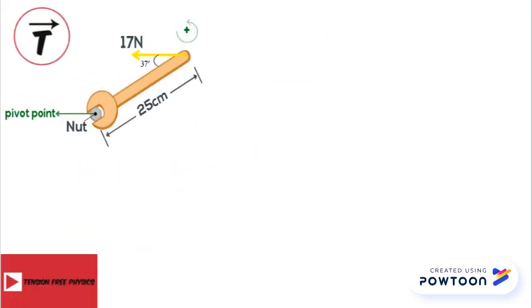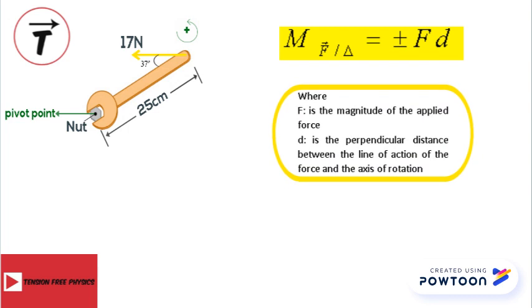So let's calculate the moment of a force. The moment of a force about fixed axis delta is equal plus or minus F times D, where F is the magnitude of the force, and D is the perpendicular distance between the line of action of the force and the axis of rotation.